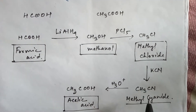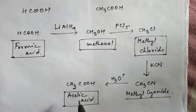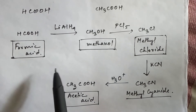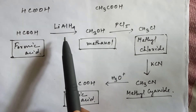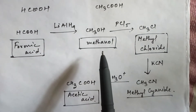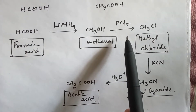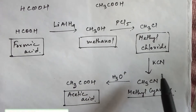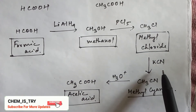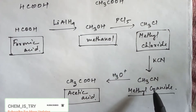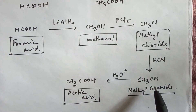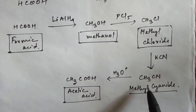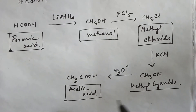So this is the four-step process of conversion from formic acid to acetic acid. First step: reduction — converts to alcohol (methanol). Second step: add PCl5 — alcohol converts into methyl chloride. Third step: add KCN (potassium cyanide) — Cl group replaced with cyanide group. Fourth step: add H2O — cyanide converts into acetic acid.